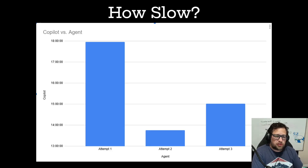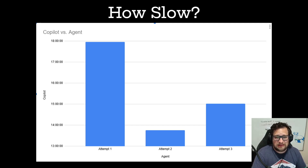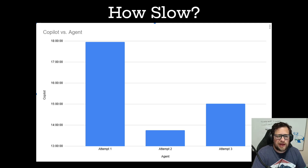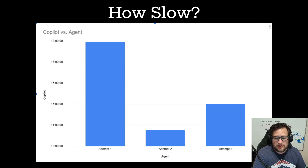So how slow is Copilot? The first attempt I ran was nearly 18 minutes — and it sat forever on editing, changing, or diffing files. Absolutely atrocious. The second attempt was a little over 13 and a half minutes. Still painfully slow. The third attempt ended up a little over 15 minutes. If we average this out, it's still just unacceptable for the complexity of the prompt I was giving it.